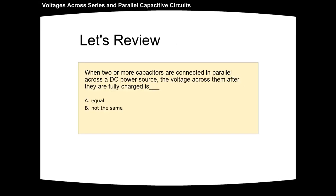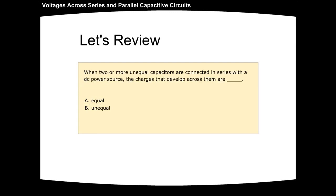Let's review. When two or more capacitors are connected in parallel across a DC power source, the voltage across them after they are fully charged is: A equal, or B not the same. The answer is A, equal. When two or more unequal capacitors are connected in series with a DC power source, the charges that develop across them are: A equal, or B unequal. The answer is B, unequal.